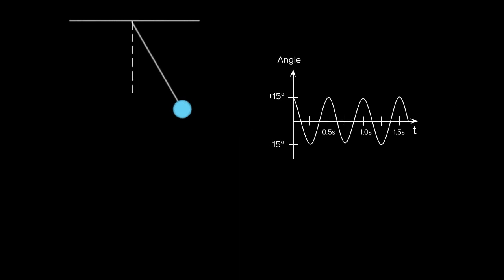Because this simple pendulum is a simple harmonic oscillator, its motion — its angle as a function of time — would be accurately described by a sine or a cosine graph. So if you were to pull this back initially by 15 degrees, you might get a graph that looks something like this.